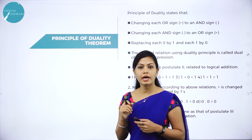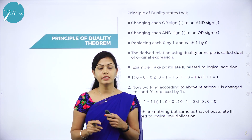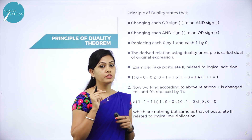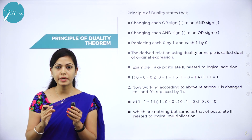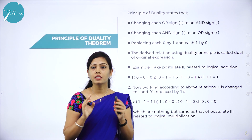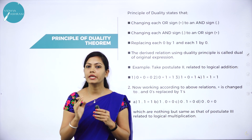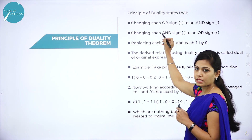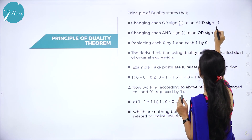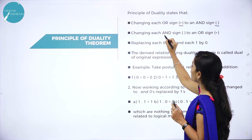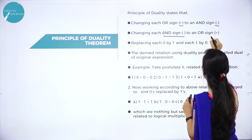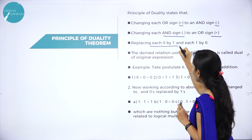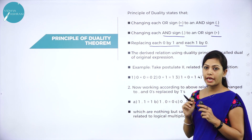Next, we have the principle of duality. The duality theorem states that if you have a true Boolean statement or equation, then the dual of this statement or equation is also true. The dual of a Boolean statement is found by replacing the statement's symbols: 0 becomes 1 and 1 becomes 0, plus becomes dot and dot becomes plus.